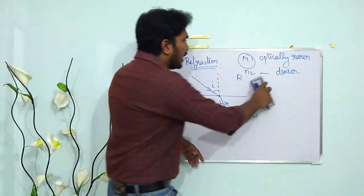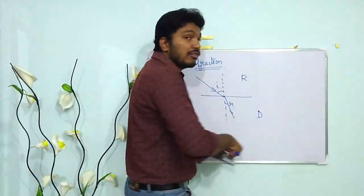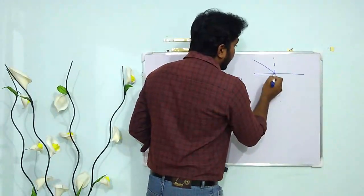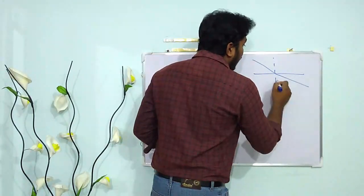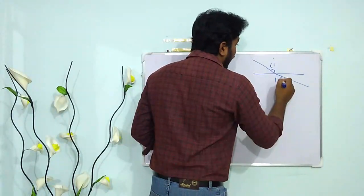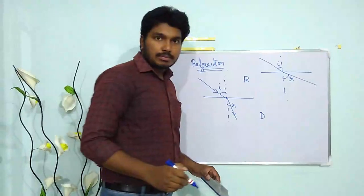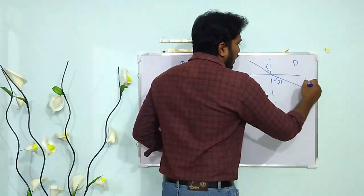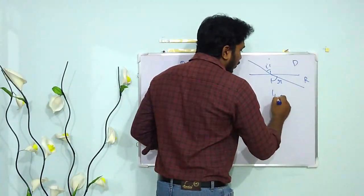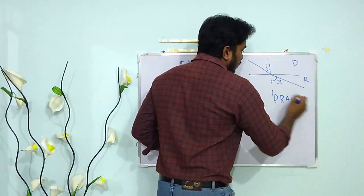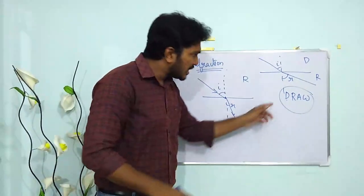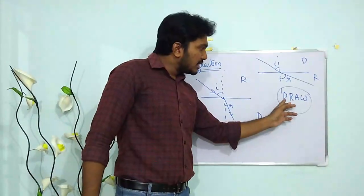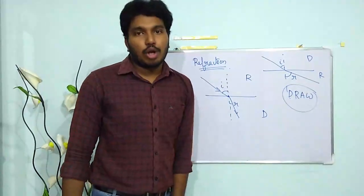If the light is moving from a denser medium to a rarer medium, it bends away from the normal. We can remember this using the term DRAW — Denser to Rarer, Away from the Normal.